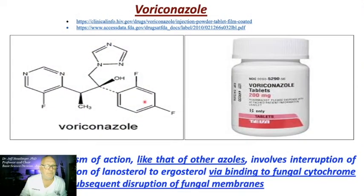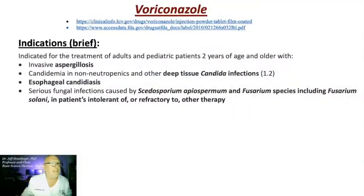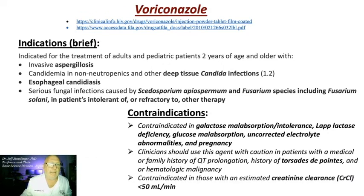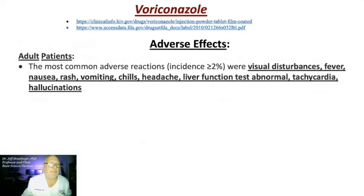Voriconazole is indicated for invasive aspergillosis, deep tissue Candida infections, esophageal candidiasis, as well as other serious fungal infections caused by agents including Fusarium, or in patients intolerant or refractory to other therapies. This drug is contraindicated in patients with galactose malabsorption, galactose intolerance, and other conditions. Numerous adverse effects are associated with voriconazole, including visual disturbances, fever, nausea, rash, vomiting, and chills — which are worse in pediatric patients.